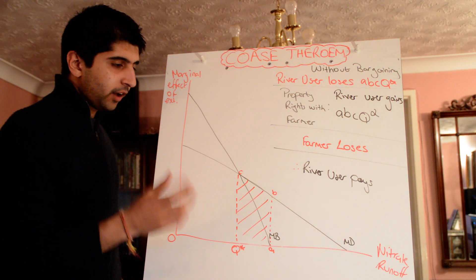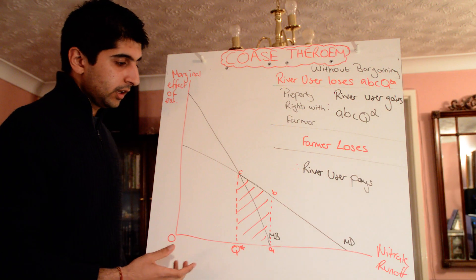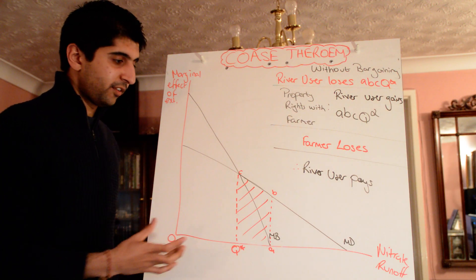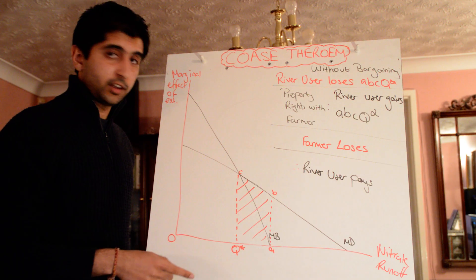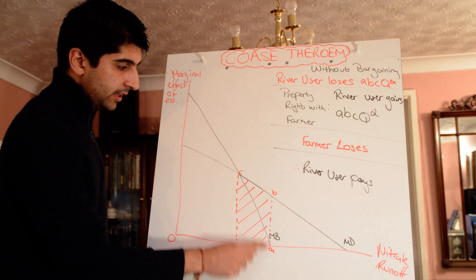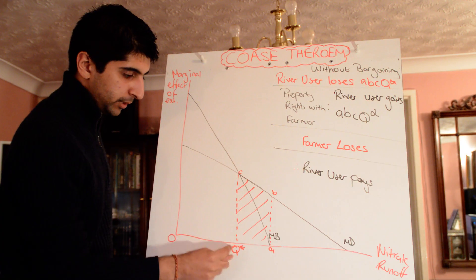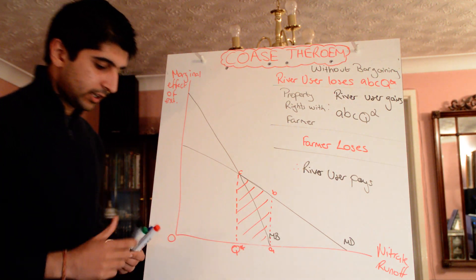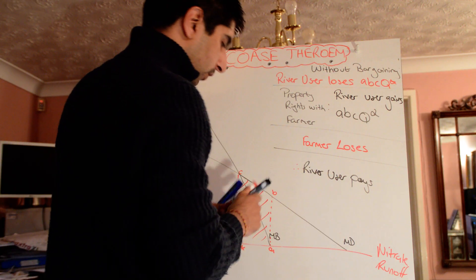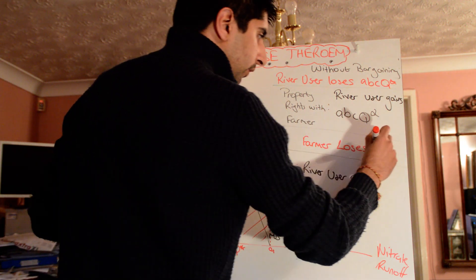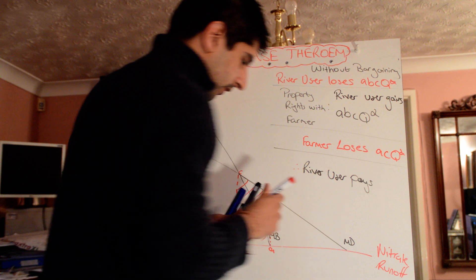But the farmer loses out by changing production levels — less is produced, so he gets less benefit than before. That loss is measured by the area underneath the marginal benefit curve that is lost, which is the triangle A, C, Q*. So the river user gains the whole area, while the farmer only loses the smaller triangle.